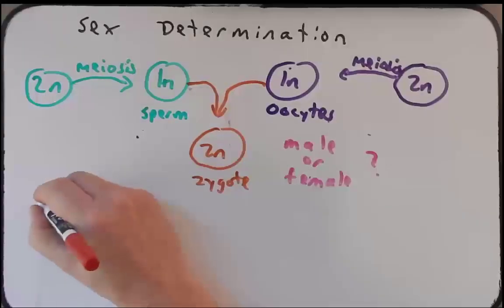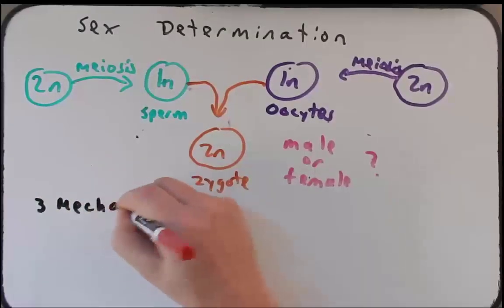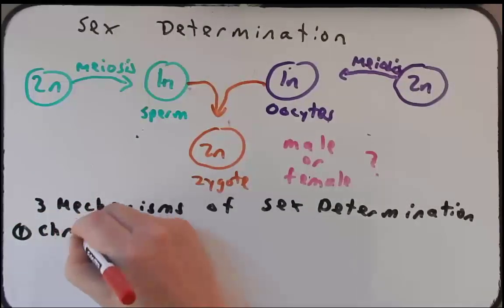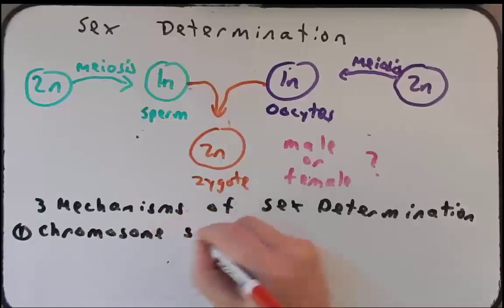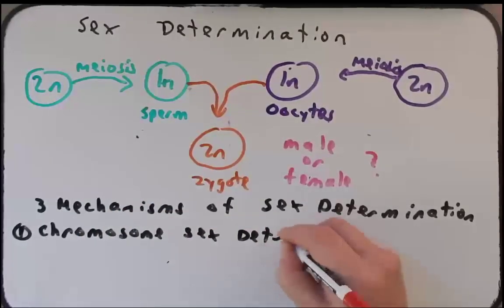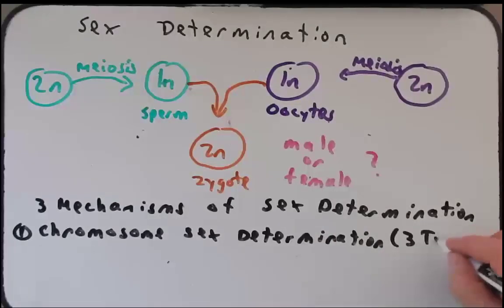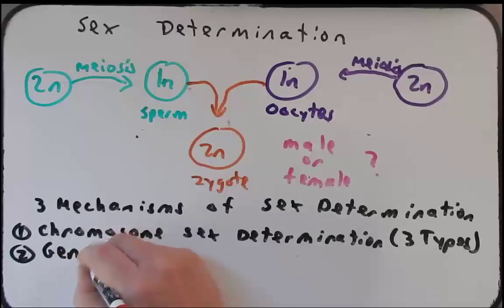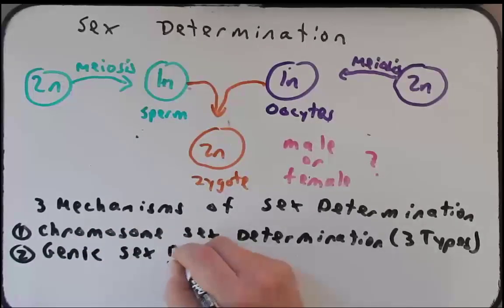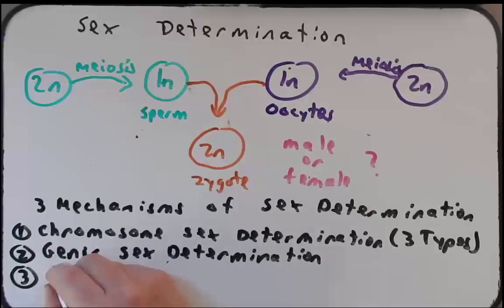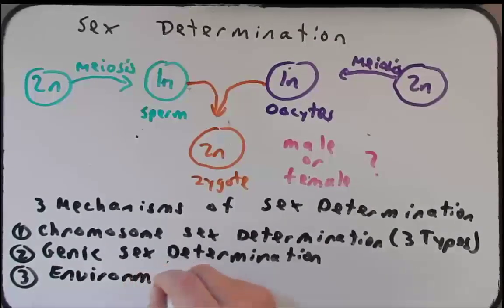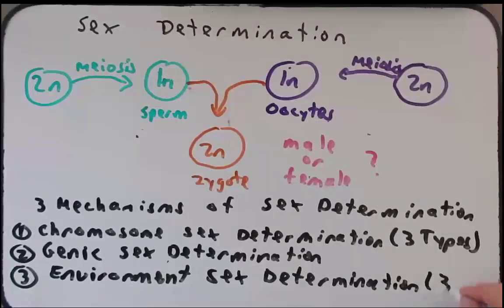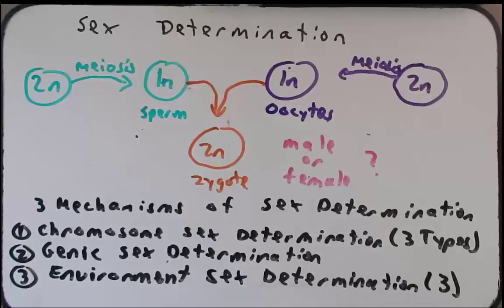Today we're going to talk about three mechanisms of sex determination. The first is the chromosomal sex determination mechanism, and there are three types we'll discuss. The second is what is referred to as the genic sex determination method. The third is the environmental sex determination method, and we'll also talk about three different ways that sex can be determined by the environment.